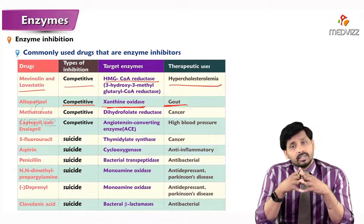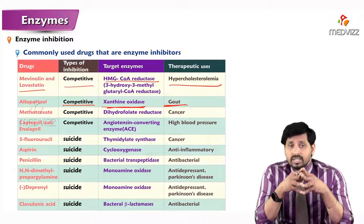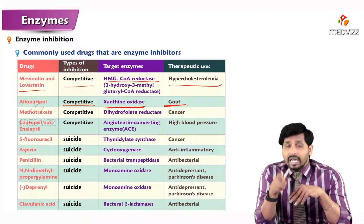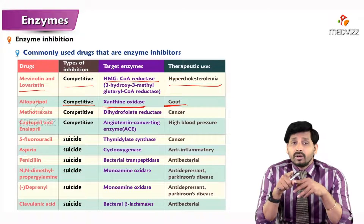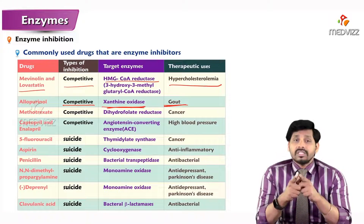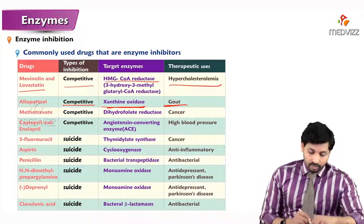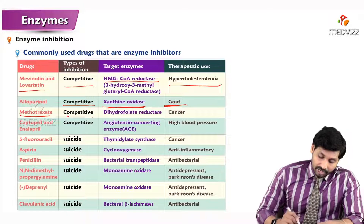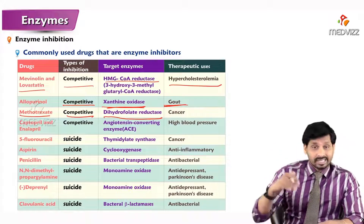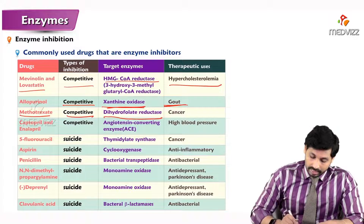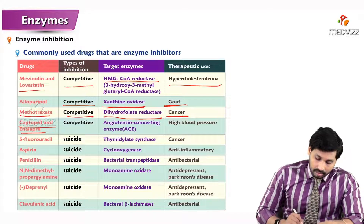Allopurinol acts on xanthine and converts it to alloxanthine, which is more soluble than uric acid and can be easily excreted into the urine. Methotrexate is an anti-cancer drug and competitive inhibitor that inhibits the enzyme dihydrofolate reductase, so there is no availability of folic acid and no cell growth — hence it is anti-cancerous.